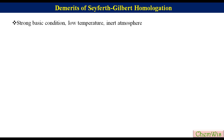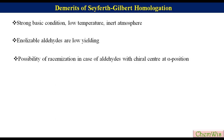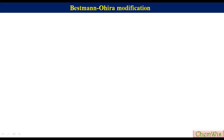Demerits of the Seyferth-Gilbert reaction: the reaction is performed under strong basic conditions, requires low temperature and an inert atmosphere. Under strong basic conditions, base-sensitive substrates such as enolizable aldehydes give lower yields because of competing aldol condensation. There is also the possibility of racemization in the case of aldehydes with a chiral center at the alpha position.